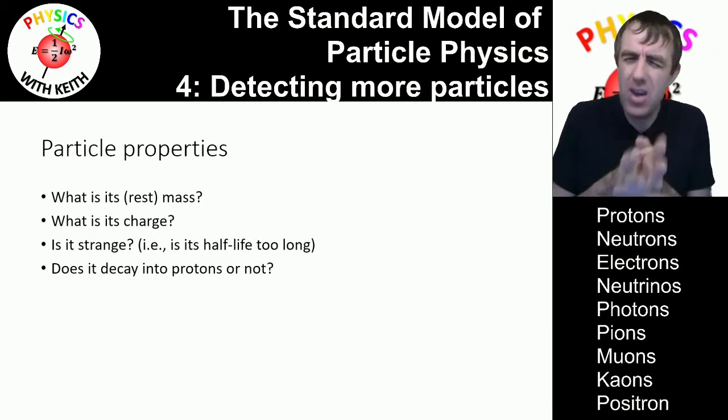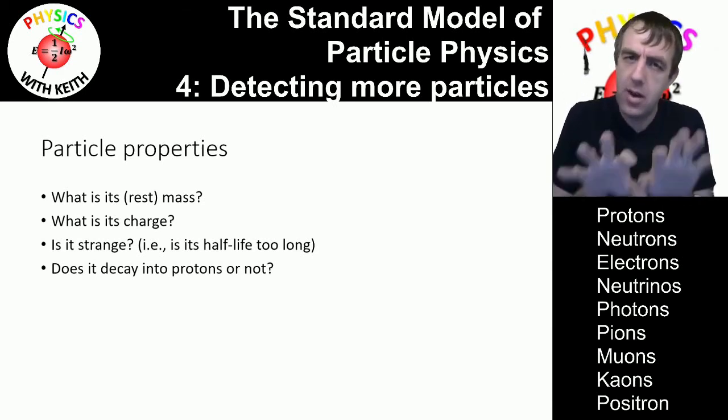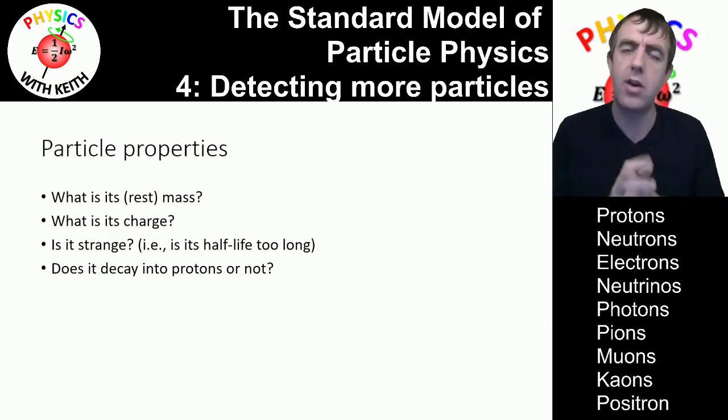And then there's another property here, strangeness. Kaons, if you remember, were odd because they seemed to have a longer half-life than we expected for their mass. So those particles got referred to as strange particles and strangeness is a particle property.